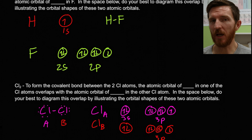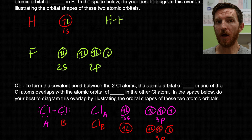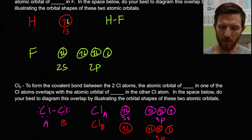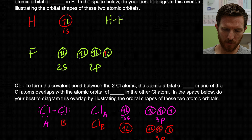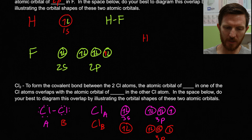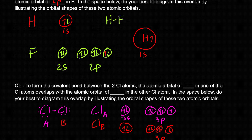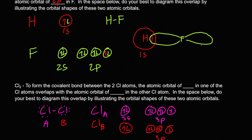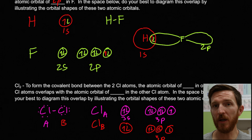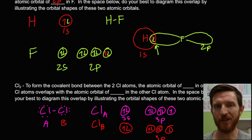Now we can visualize the bonding that forms between hydrogen and fluorine. The 1s orbital of hydrogen is going to overlap with the 2p orbital of fluorine to form our covalent bond. Our hydrogen atom has this single electron in the 1s orbital, and our fluorine atom has one electron in the 2p orbital. We see the overlap of that space to form the bond between hydrogen and fluorine.